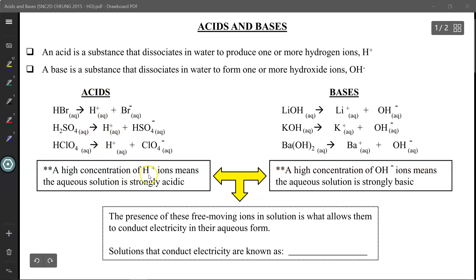The more H+ ions floating around in solution, the more acidic that acid is. The opposite is also true: if there are fewer H+ ions floating around in solution, then it's going to be a weaker acid.